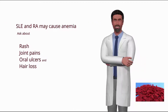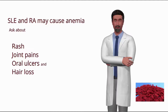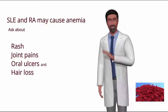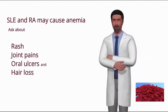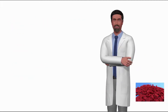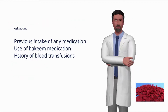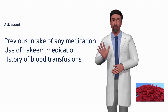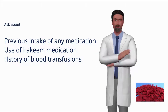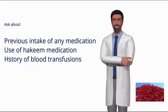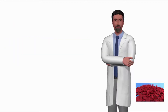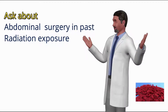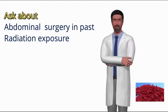While taking history of anemia in the systemic review, ask about rash, joint pains, oral ulcers, and hair loss, as SLE and RA may cause anemia. In medication and treatment history, ask about previous intake of any medication, including use of hakeem (traditional) medication. Ask about history of blood transfusions and how many times they have been given.